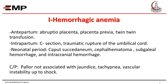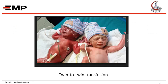Starting with hemorrhagic anemia, this hemorrhage might happen in the antepartum period as abruptio placenta, placenta previa, or twin-twin transfusion. Or it may happen in the intrapartum period due to C-section or traumatic rupture of the umbilical cord. It might also happen in the neonatal period as in caput succedaneum, cephalohematoma, subgaleal hemorrhage, and intracranial hemorrhage. The clinical picture is usually very pallid but not associated with jaundice, along with tachypnea and vascular instability.